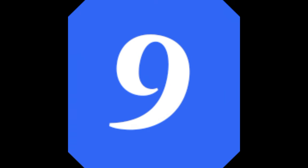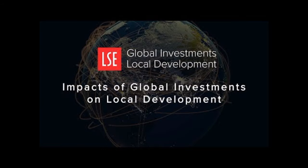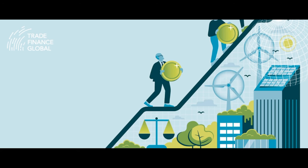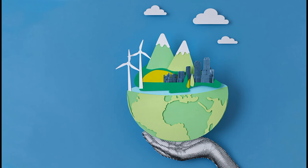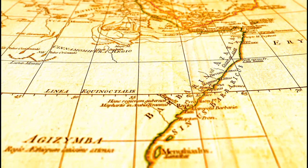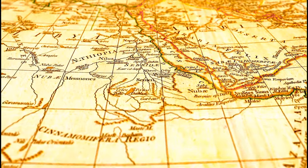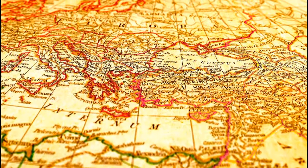Number 9: Impact on Global Investment. The collapse of the USD would have profound implications for global investments, reshaping the landscape for investors and businesses worldwide. Increased Volatility: financial markets would experience heightened volatility as investors react to the uncertainties stemming from the collapse of the USD. Fluctuations in currency values, stock prices, and other asset classes could make investment decisions more challenging. Re-evaluation of Portfolios: investors would need to reassess their portfolios in light of the changing economic dynamics. Traditional investment strategies might need adjustments to account for the shifting values of currencies, commodities, and securities.